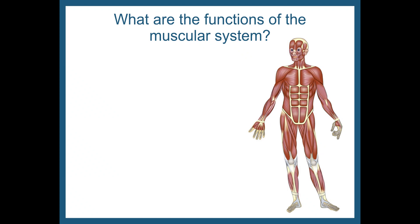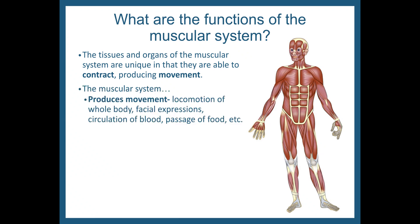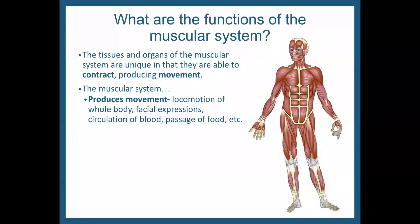Let's ask: what are the functions of the muscular system? The tissues and organs of the muscular system are unique in that they are able to contract, and this produces movement. The muscular system does the following four things: it produces movement — that means locomotion of the whole body, including facial expressions, circulation of the blood, passage of food, and so on.